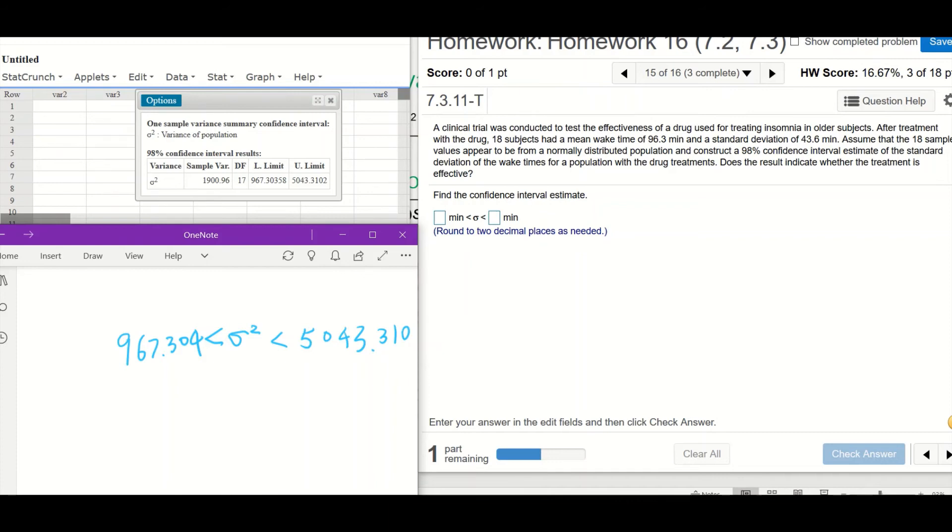Okay, so we're asked to find the confidence interval for the standard deviation. So what you need to do is square root the given values here so that you can find the confidence interval for standard deviation. Okay, round my answer to the nearest hundredth will be 31.10 to 71.02.